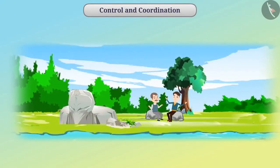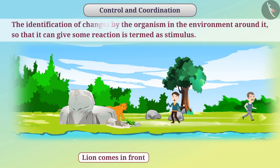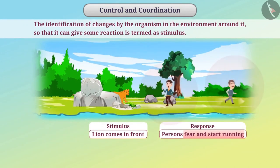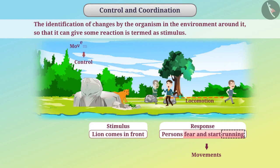Each organism identifies changes occurring around it and responds accordingly. The identification of environmental changes so that the organism can react is termed a stimulus, and the reaction given to the stimulus is called the response. To give a response, organisms perform various movements. If an organism changes its position during movement, that is called locomotion. Controlling movements and having various organs work together is called coordination.